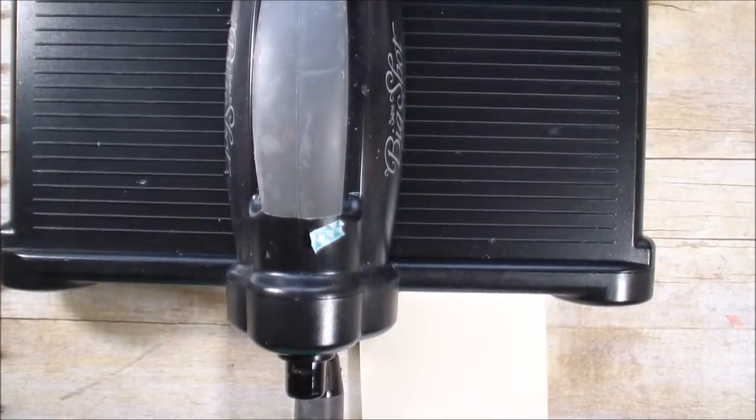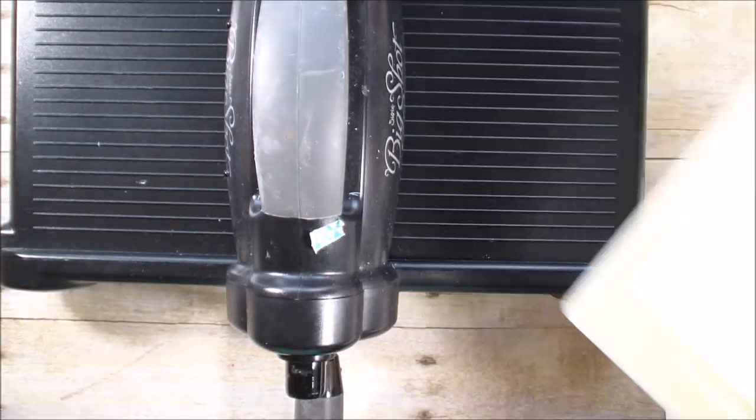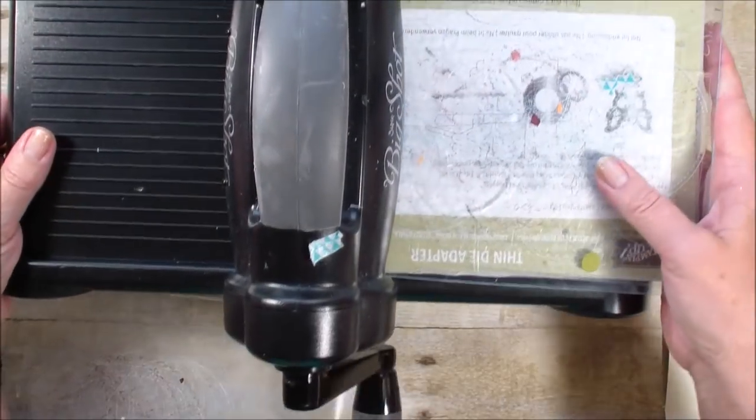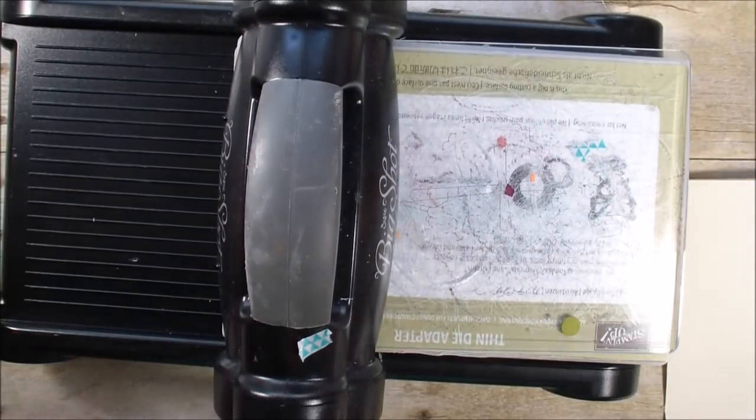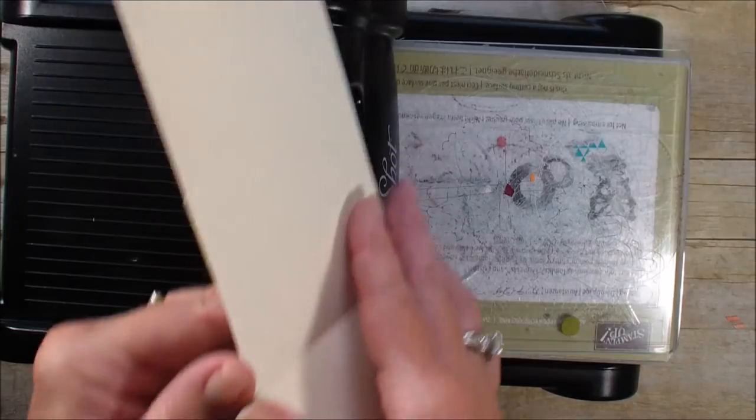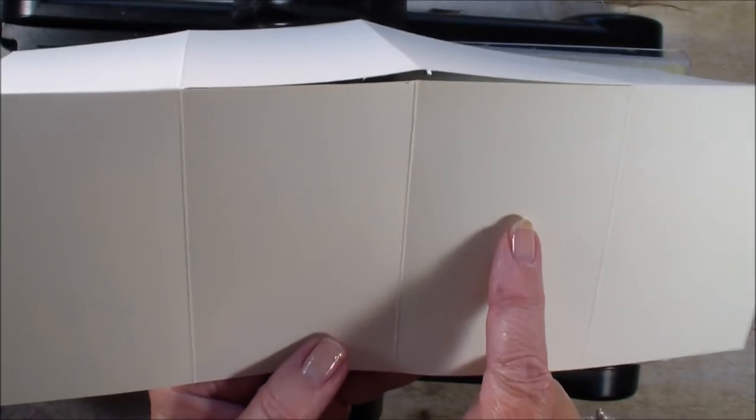What she did was used the layering ovals. Let me find all my pieces for my Big Shot. So I got my platform, my thin adapter, my cutting plate, and then what she did was we need to cut the oval on both of these sides.